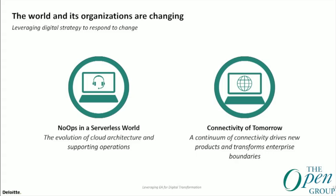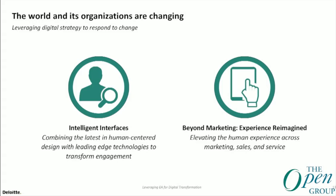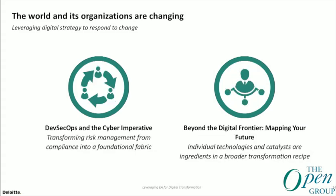Internet of Things — this is an area where we're seeing a lot of value creation and unintended second and third-order impacts associated with increased connectivity. We talked about the API economy as well as intelligent interfaces — not just open standard APIs, but intelligent APIs and intelligent interfaces. And DevSecOps and the cyber imperative, particularly emphasizing cyber resiliency and building a cyber resilient architecture, are absolutely critical. Finally, mapping your vision to the appropriate digital frontier.